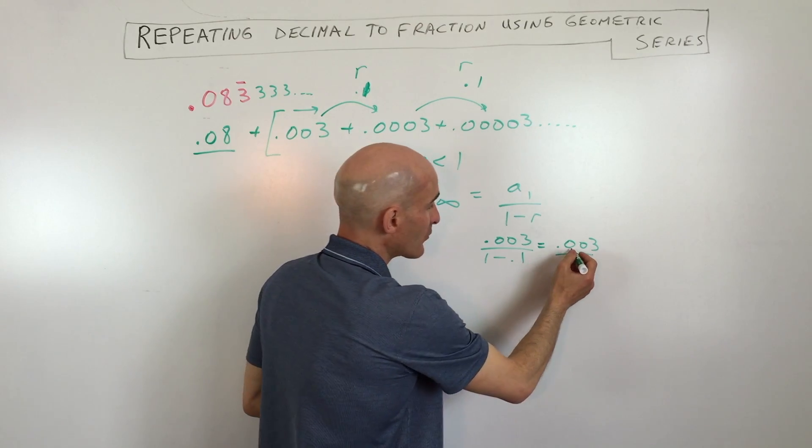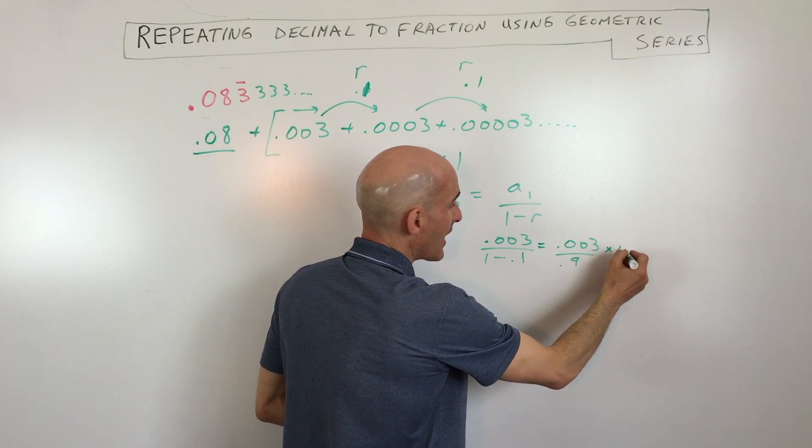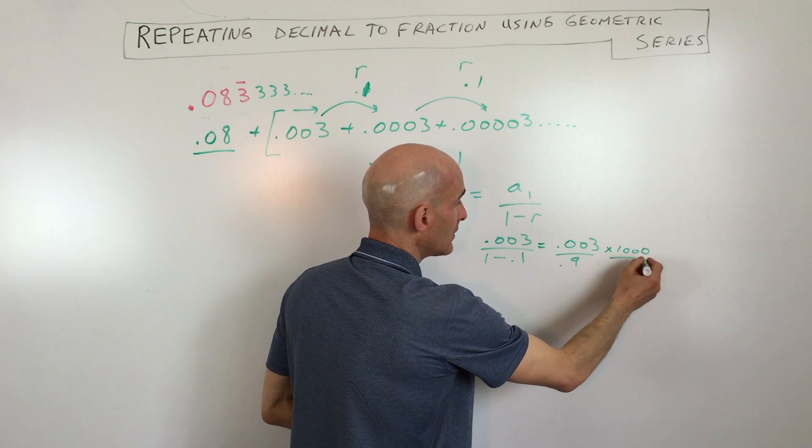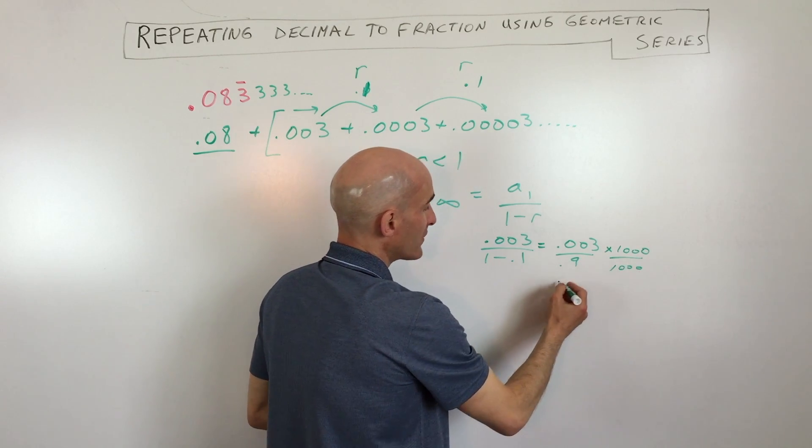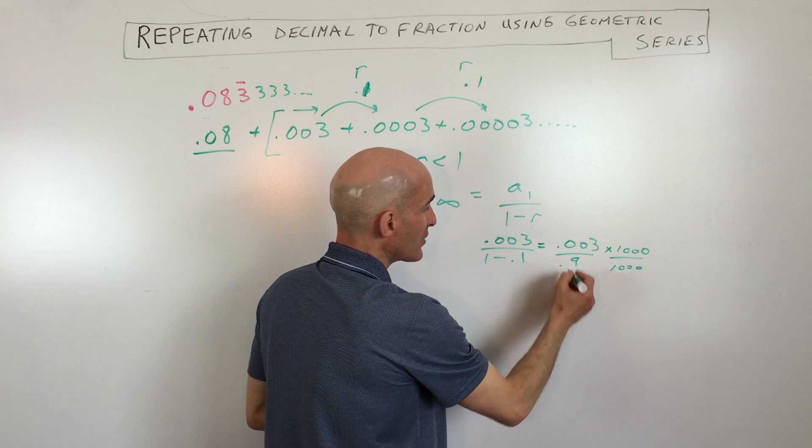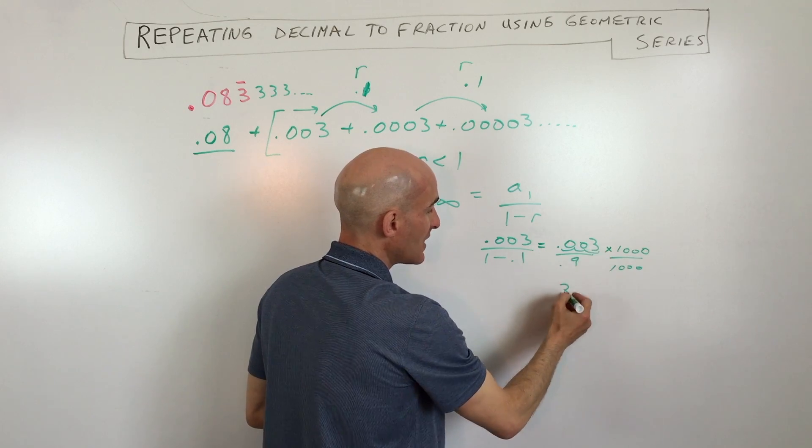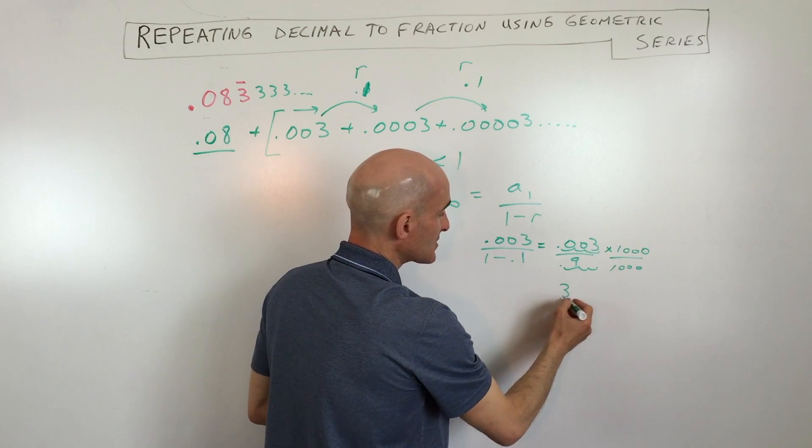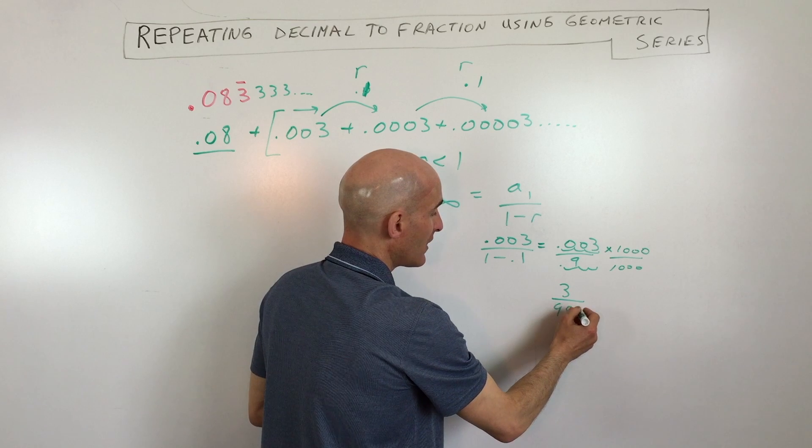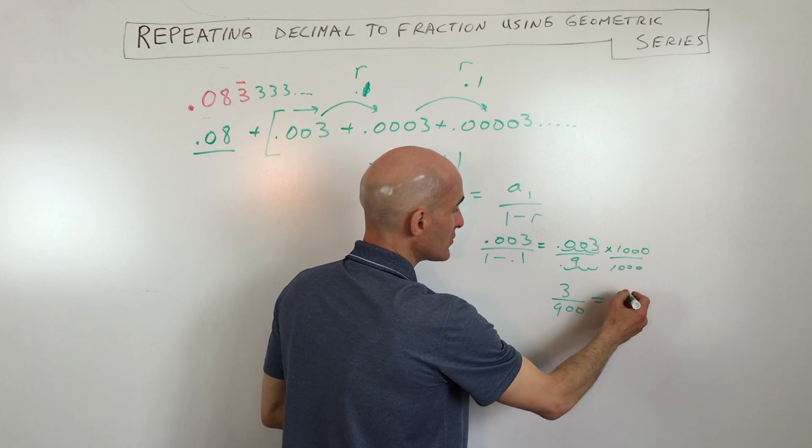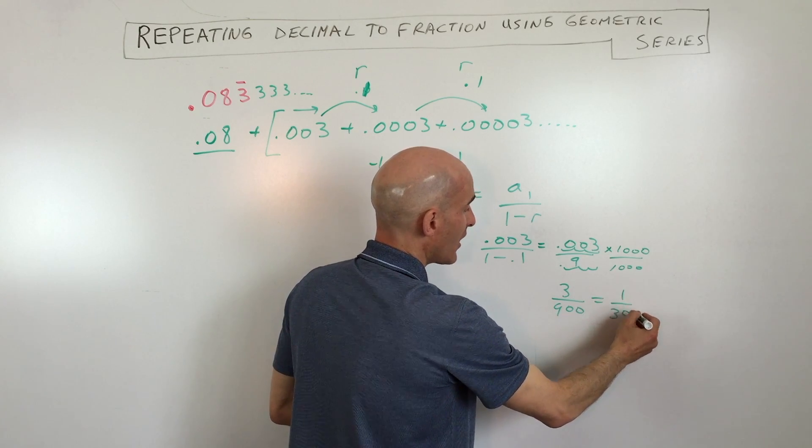So let's see if we can get rid of these decimals. Let's multiply the top and bottom by 1,000. And so what that converts to is it's going to be 3 because we're moving the decimal three places. And this one we're going to be moving it three places. So that comes to 3 over 900, which equals 1 over 300.